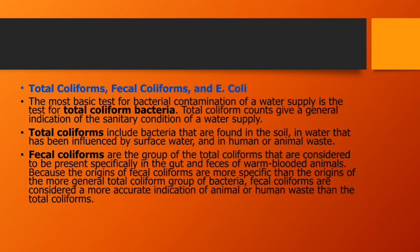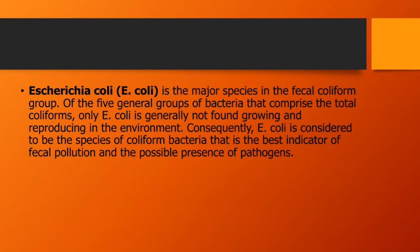Total coliforms include bacteria found in the soil and in water influenced by surface water and animal waste. Fecal coliforms are the group of total coliforms considered to be present specifically in the gut and feces of warm-blooded animals. Because the origin of fecal coliforms is more specific than that of the general total coliform group, fecal coliforms are considered a more accurate indication of animal or human waste contamination than total coliforms.